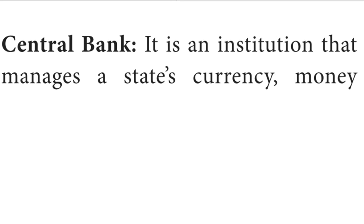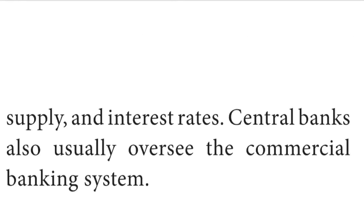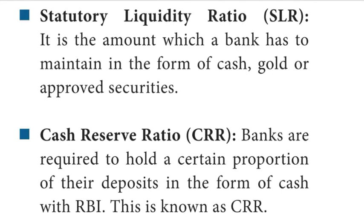Question number 10: Define central bank. Central bank is an institution that manages a state's currency, money supply, and interest rate. Central banks also usually oversee the commercial banking system. Question number 11: Distinguish between CRR and SLR. CRR — Cash Reserve Ratio: banks are required to hold a certain proportion of their deposits in the form of cash with RBI. SLR — Statutory Liquidity Ratio: the amount a bank must maintain in the form of cash, gold, or approved securities.